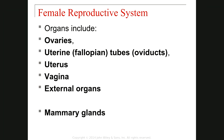The female reproductive system includes different organs. We have ovaries, we have a uterine tube or fallopian tube — the other name is oviduct. After that, we have a sac-like structure which we call the uterus. Then there is a muscular tube which is the vagina, and we have some organs which we call external genitalia or external organs.